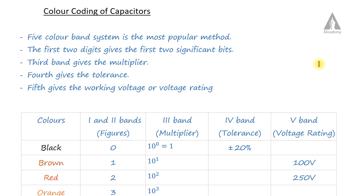Now discussing the color coding of capacitors. We can represent the capacitance value of capacitors using color bands. In resistors we have 4 color bands, but in capacitors we use 5 color bands.